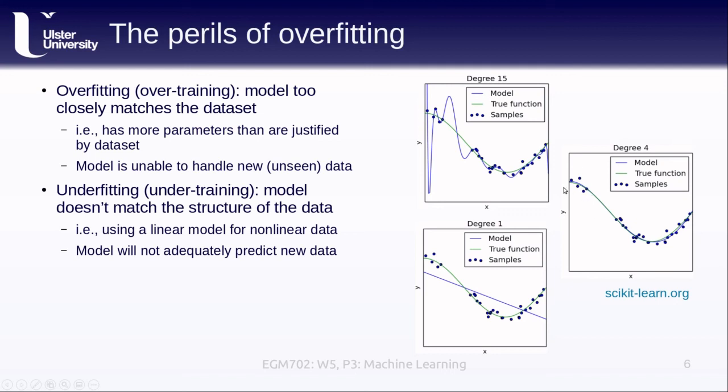We want to make sure that when we're fitting our data, our models are generalizable. That means they work well with new unseen data, they're not adhering too closely to our training data, but they're also adequately capturing the variability that we see in the training data.